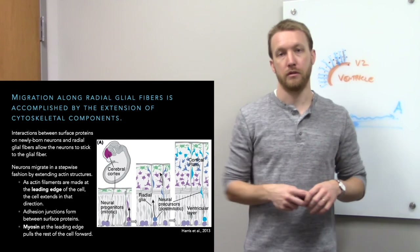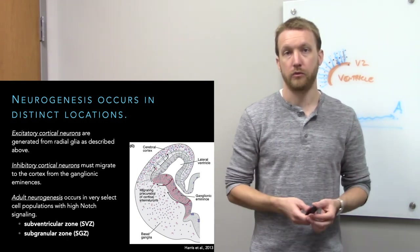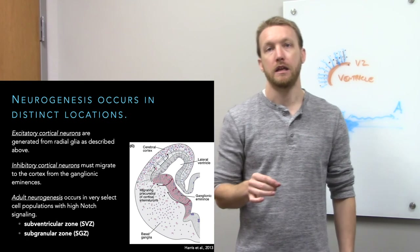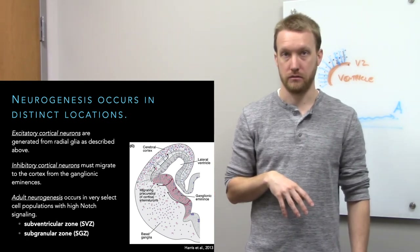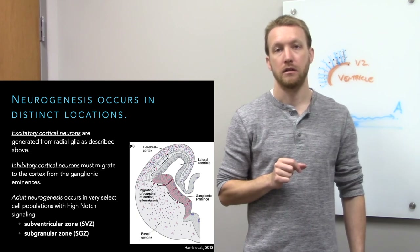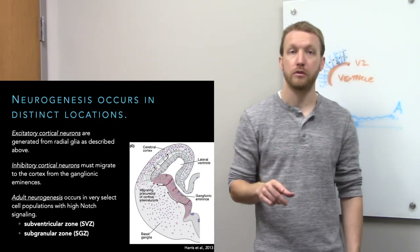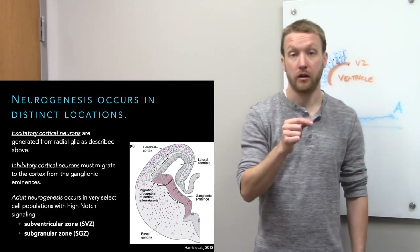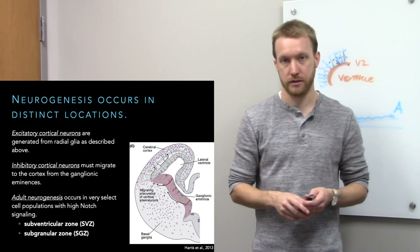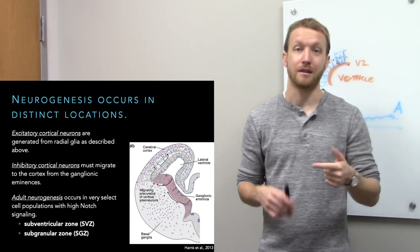Excitatory neurons are created locally in the cortex this way. Inhibitory neurons, however, are created in more ventral regions called the ganglionic eminences and must then crawl a long distance to settle in the cortex. Those neurons also form subcortical nuclei like the basal ganglia — which is why the basal ganglia is filled with almost exclusively inhibitory neurons. In development: excitatory neurons arise locally, inhibitory neurons arise in the ganglionic eminences and migrate to their final destination.